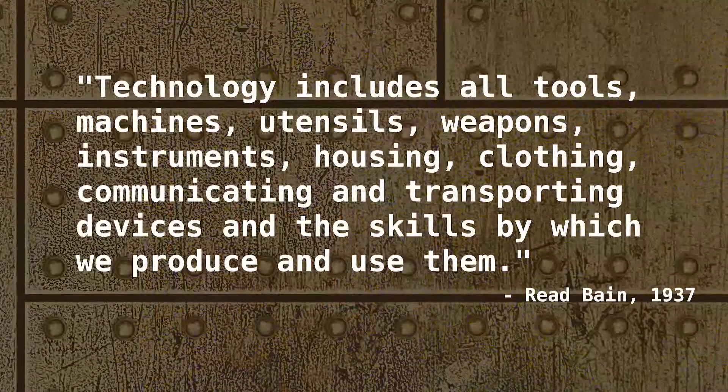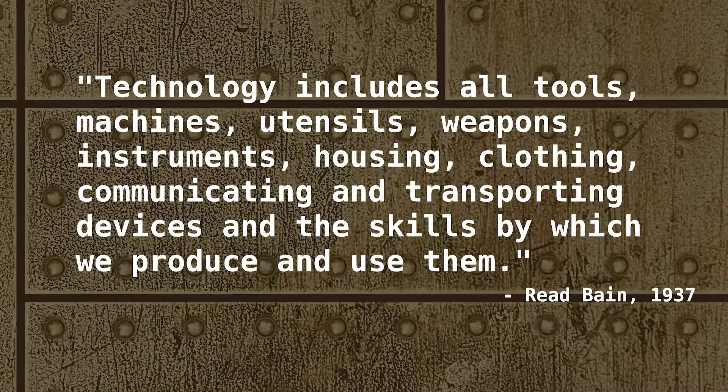In 1937, American sociologist Reed Bain wrote that technology includes all tools, machines, utensils, weapons, instruments, housing, clothing, communicating and transporting devices, and the skills by which we produce and use them — a definition still pretty commonly agreed upon among scholars today.